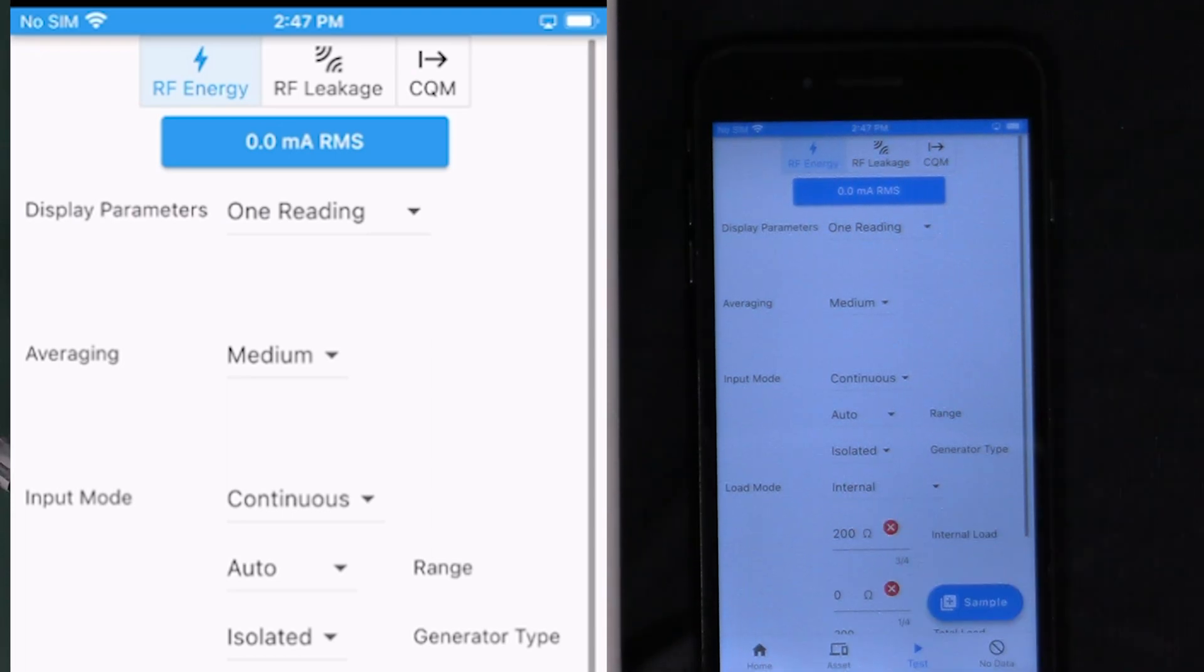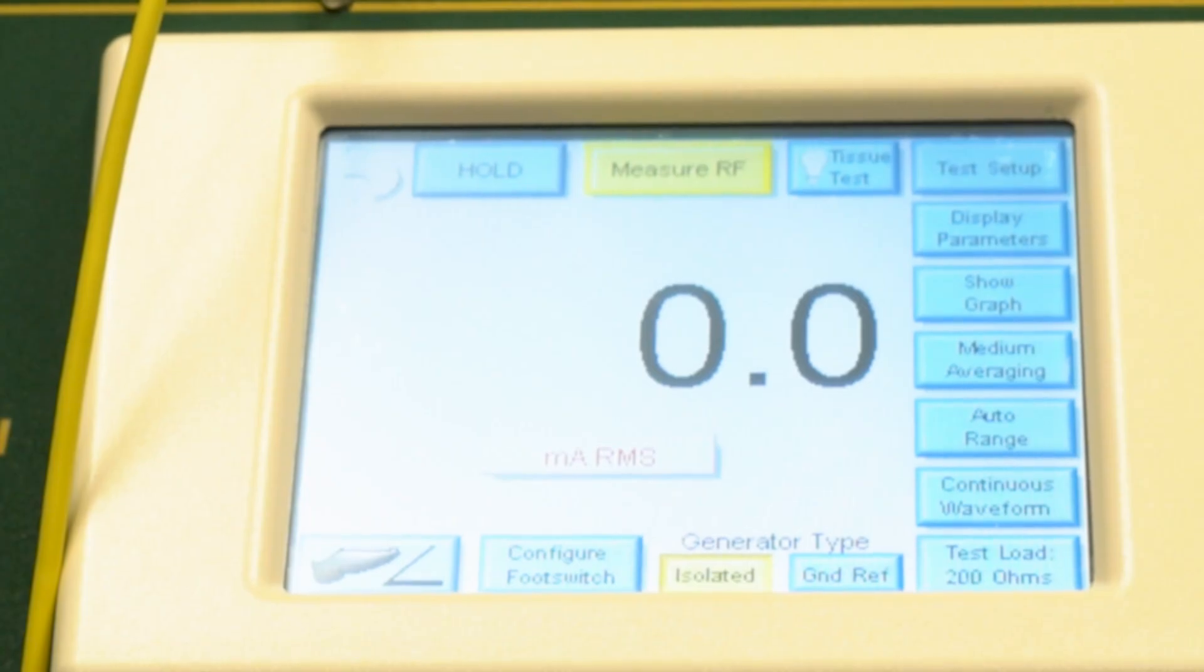At the top of the screen we can see RF energy, RF leakage and CQM. These are the three main test modes that we can test using the 2400. We'll start with RF energy.